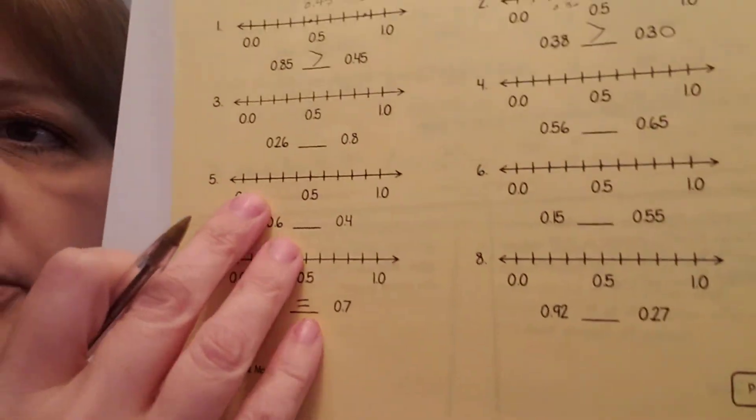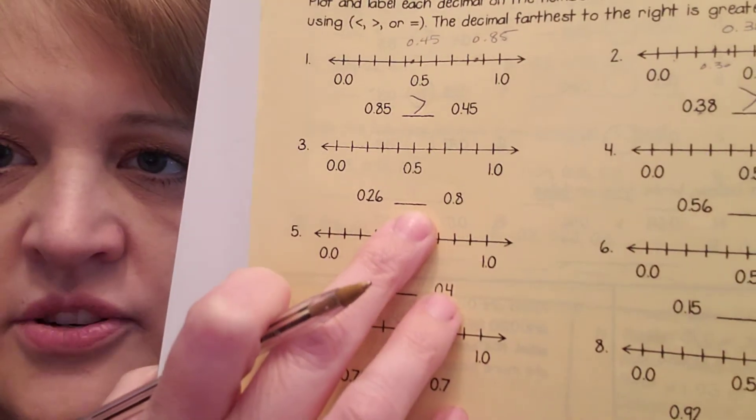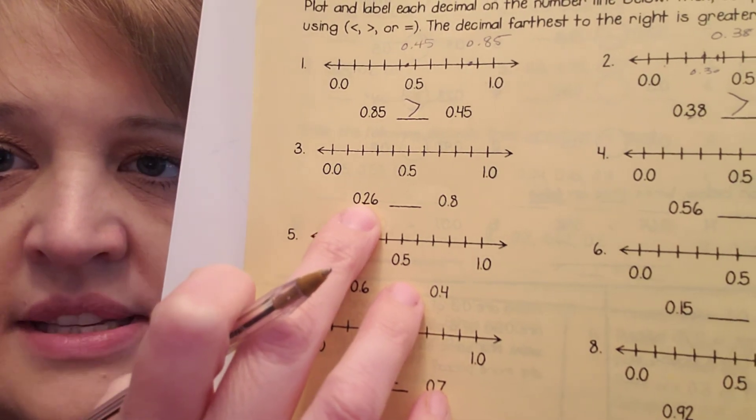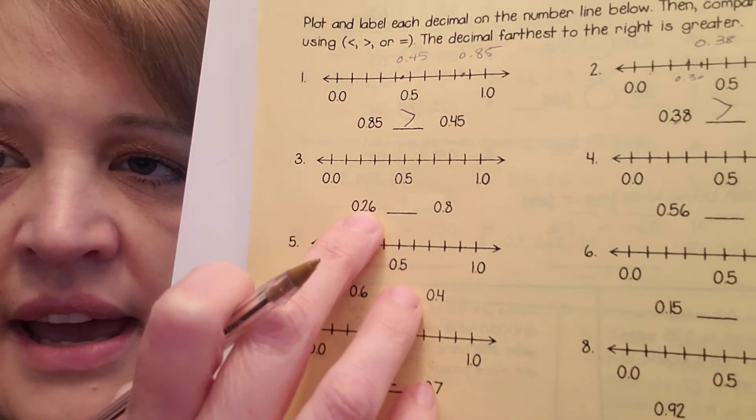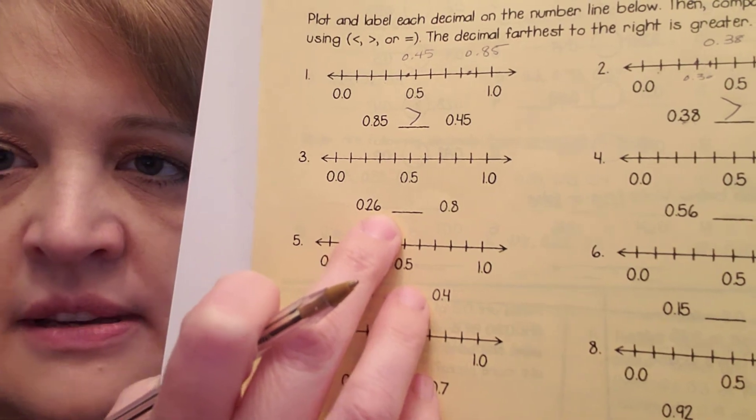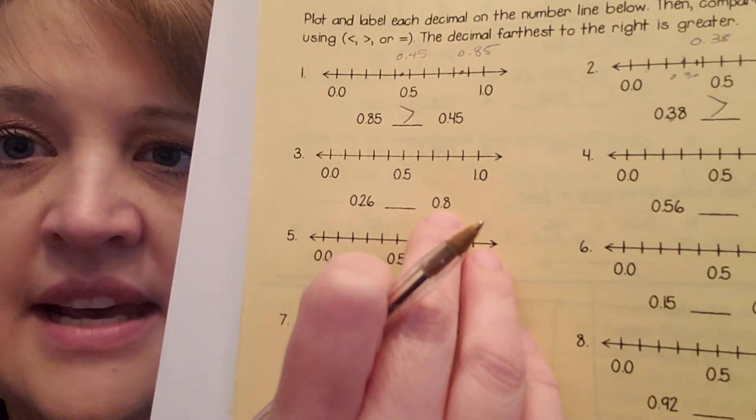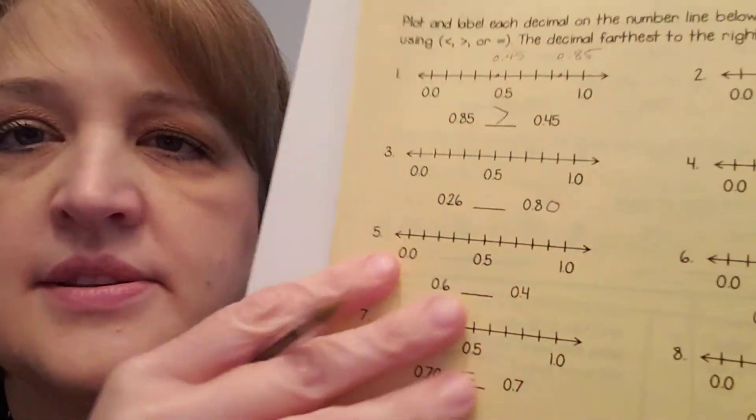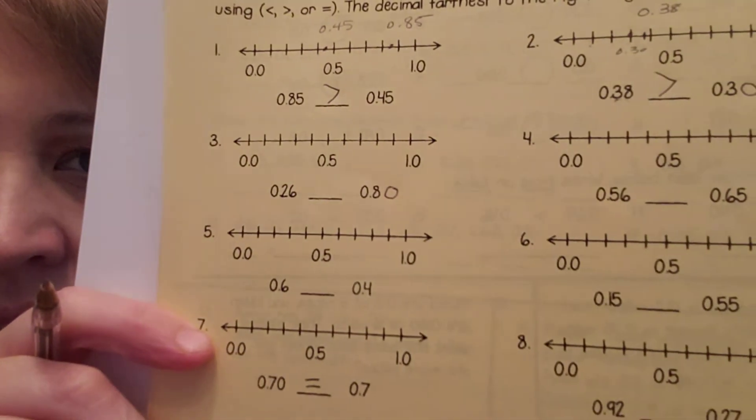So, go through. What are you going to change this one into? I have to compare apples to apples. 26 hundredths, two dimes, six pennies, eight dimes, and how many pennies? Zero pennies. Now, I can do it.